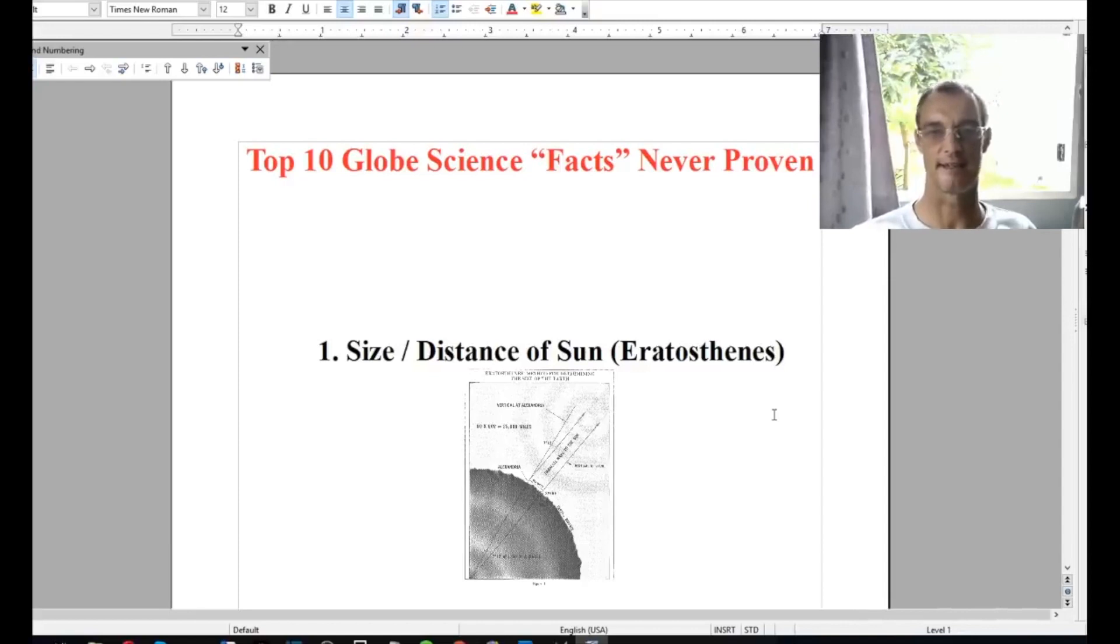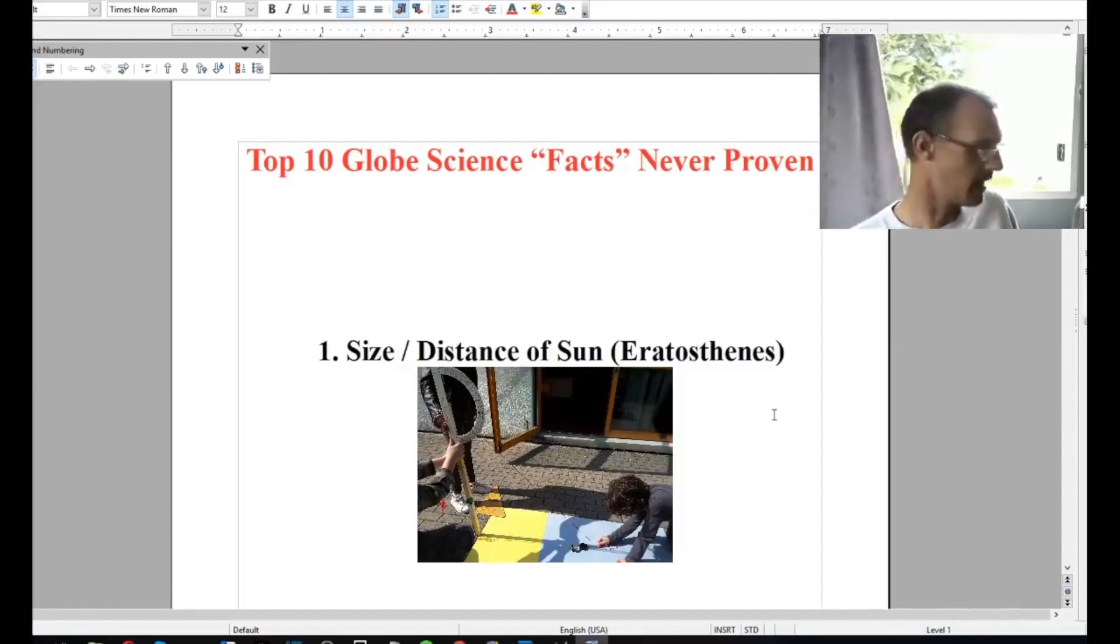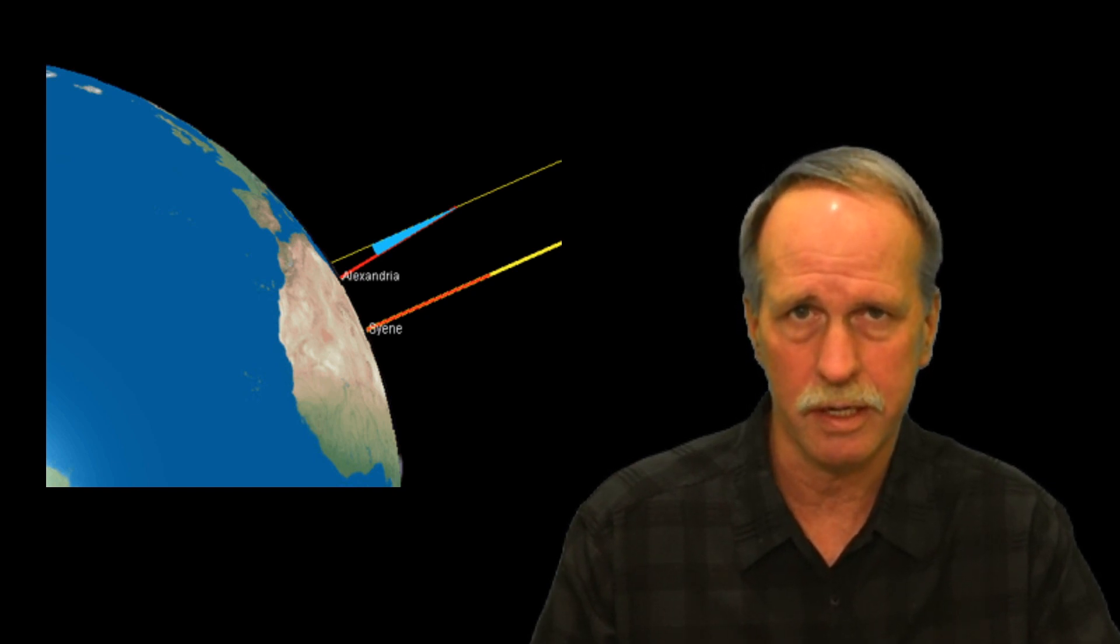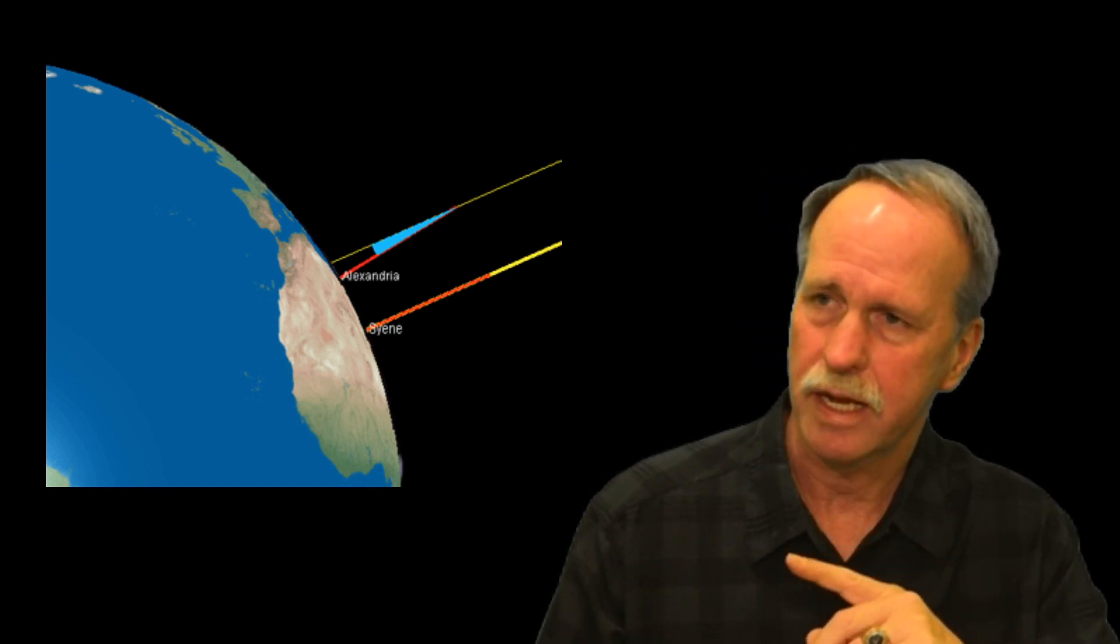And then from that, the size of the sun and the distance to the sun from the Earth has been calculated. Well, no, Nick, that's not quite true. We didn't calculate the size of the sun nor the distance to the sun using this experiment. I think you're confusing it with Aristarchus. This is what Eratosthenes actually did.